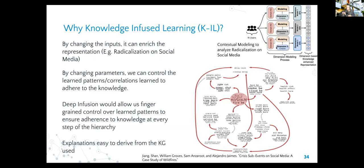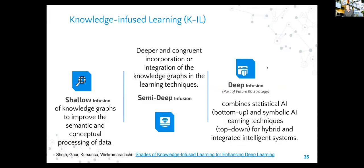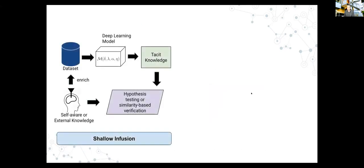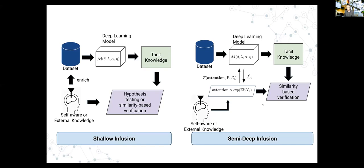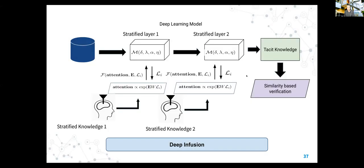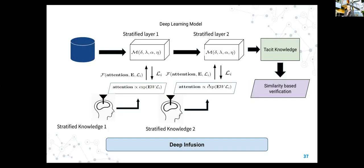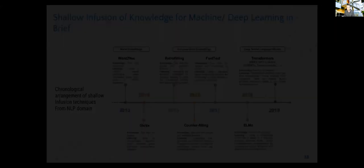We were able to understand the nuances because we had the knowledge for each of them - otherwise it's pretty much impossible. We came up with a taxonomy of different ways to bring knowledge into deep learning: shallow learning, semi-deep learning, and deep learning. The radicalization example was semi-deep learning because it took segments and infused knowledge at one step in the whole process. Shallow infusion is basically embedding - knowledge and data embeddings combined. Semi-deep uses attention to bring in knowledge at one layer, and deep infusion brings in knowledge at different layers and different levels of abstraction.